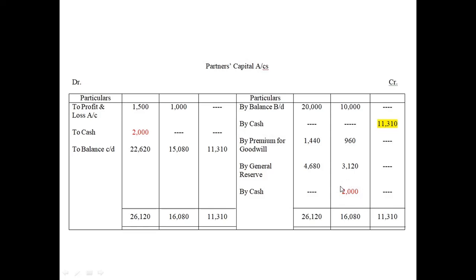Please focus carefully here because this is very tricky. In upcoming questions up to number 89 we follow the same method. Question 70 is very important for building your foundation. Questions 67, 68, 69 are easier — you just calculate the adjusted capital and find the new partner's capital. But from now onwards it gets more complex, so practice accounts daily or you will forget.